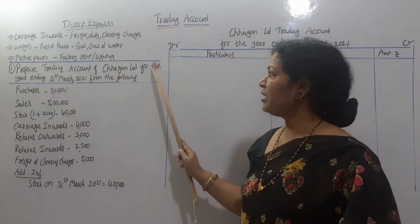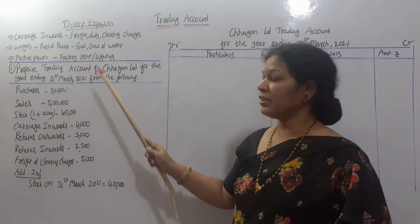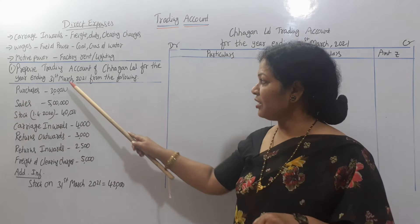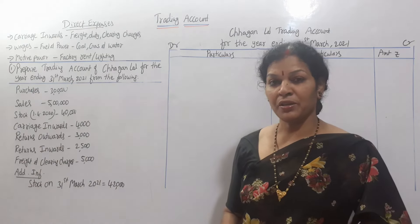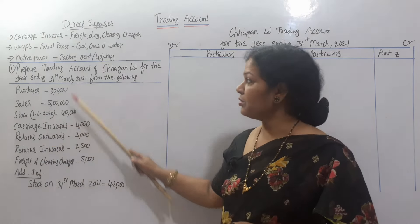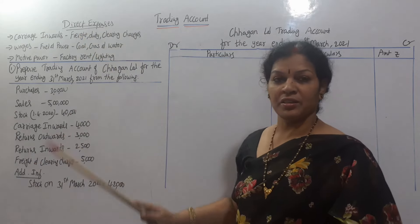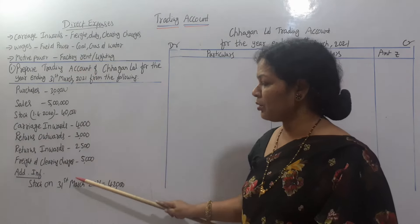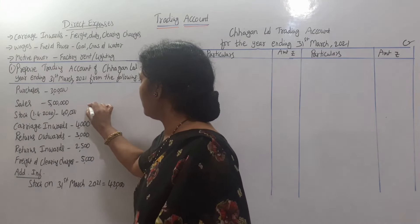The year beginning is 1st April 2020 and the year ending is 31st March 2021. Opening stock is at the beginning — 1st April 2020. The additional information states stock on 31st March 2021, which is the closing stock. Opening stock is at the start; closing stock is at the end.